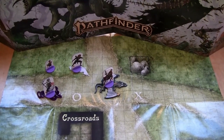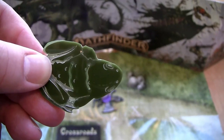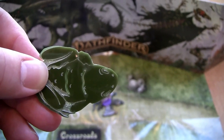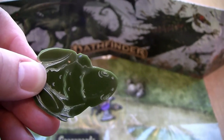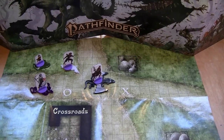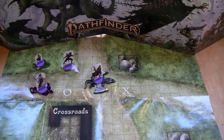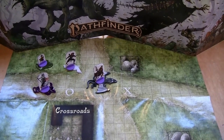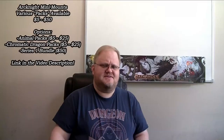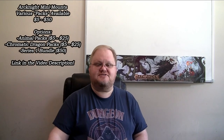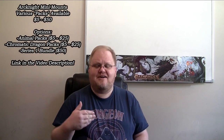The mini mounts also come compatible with spaces where you can insert flat plastic minis from Arknight, so they work seamlessly with other Arknight products. My wife and I hope to invest in the flat plastic minis eventually, but right now we're using the Pathfinder pawns that Paizo produces, and they also work perfectly well with Arknight's mount minis.